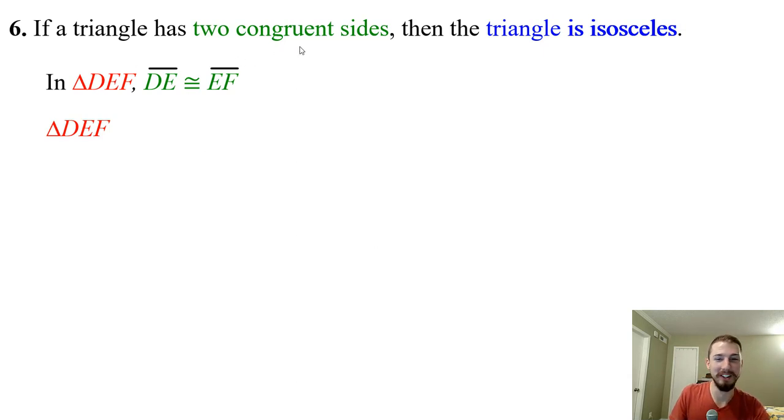Moving on. If a triangle has two congruent sides, then the triangle is isosceles. So in triangle DEF, we know that DE is congruent to EF, which means that two sides are congruent. So if triangle DEF has two congruent sides, then what can we conclude? Triangle DEF is isosceles.